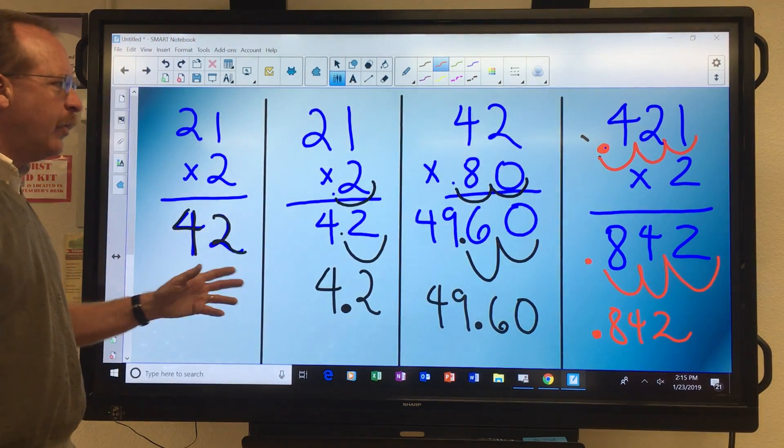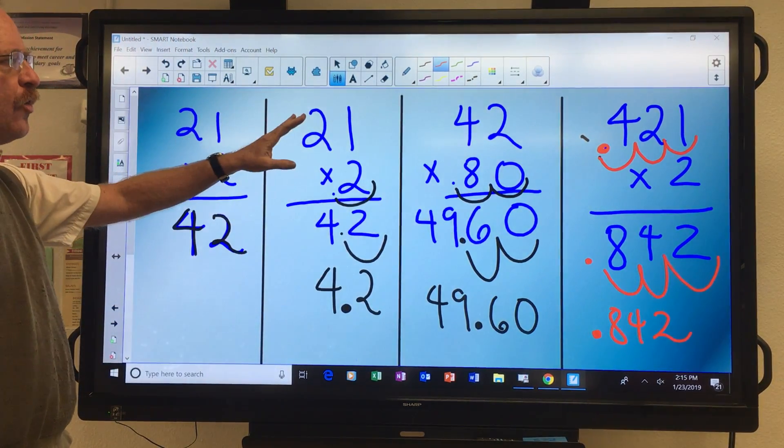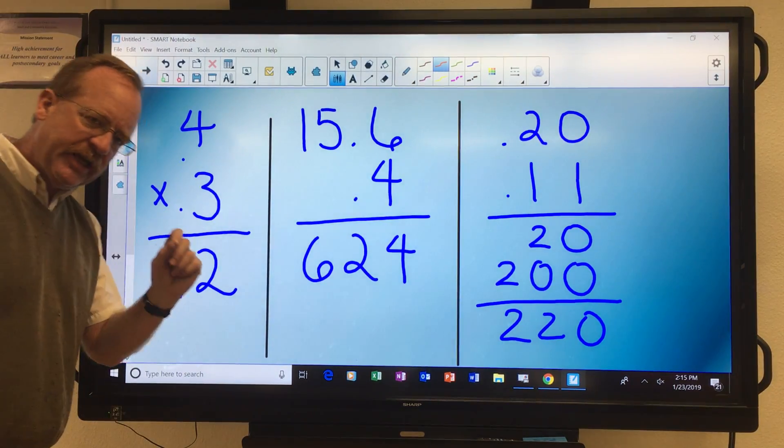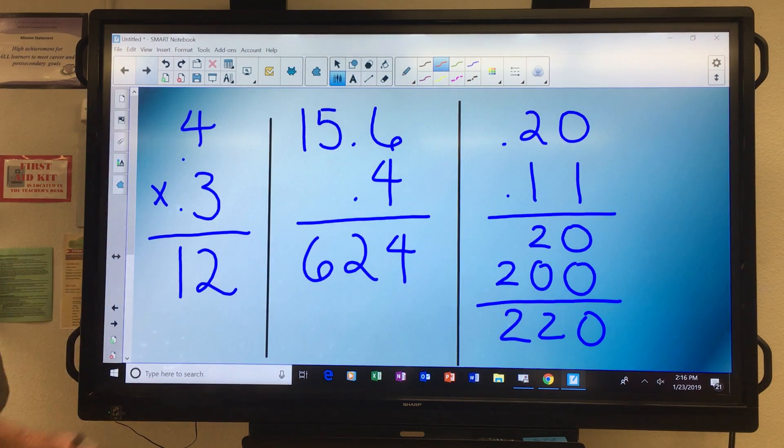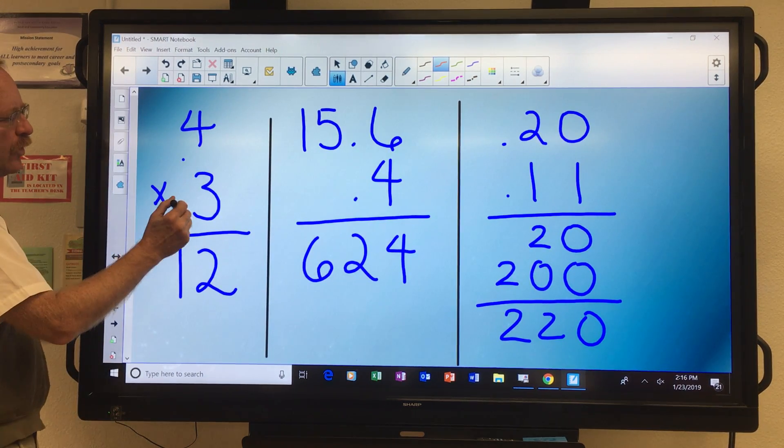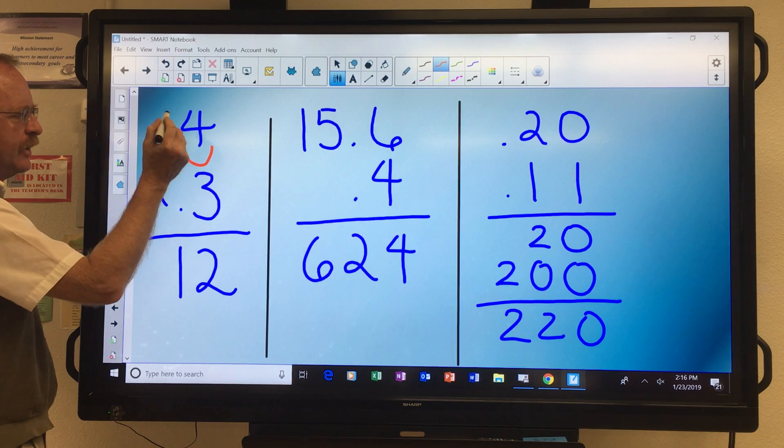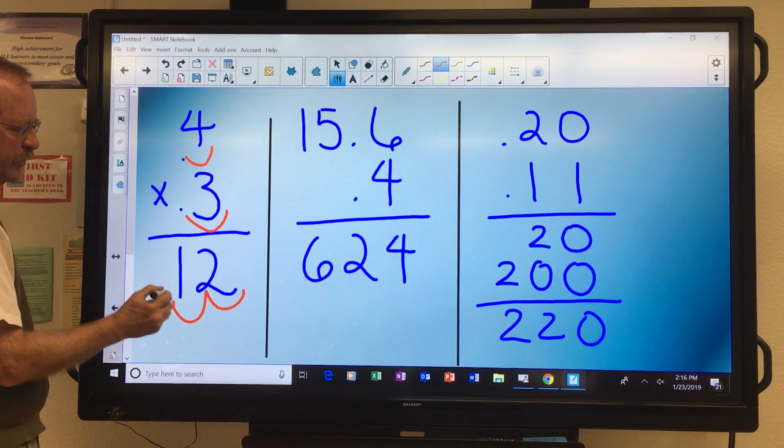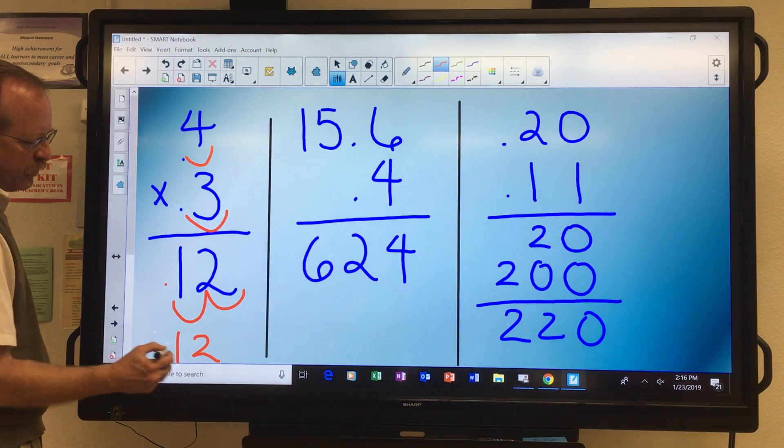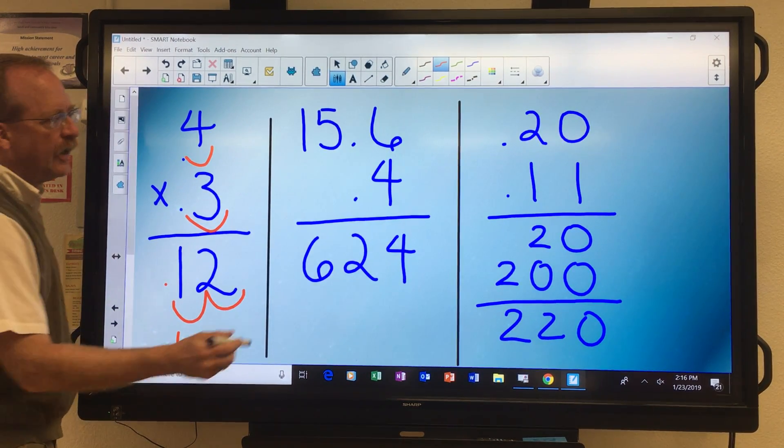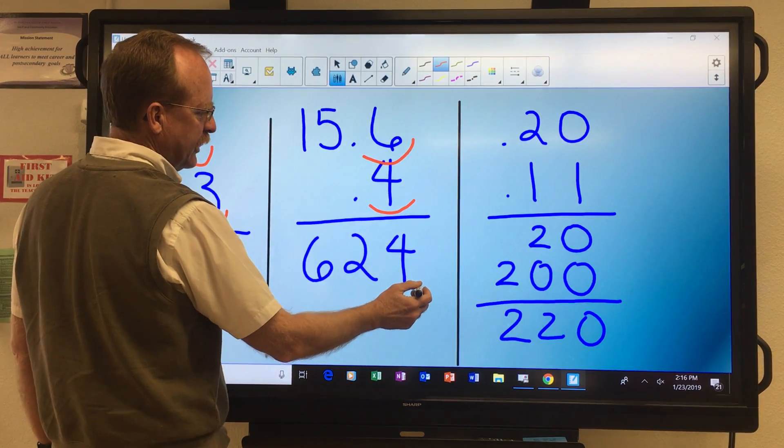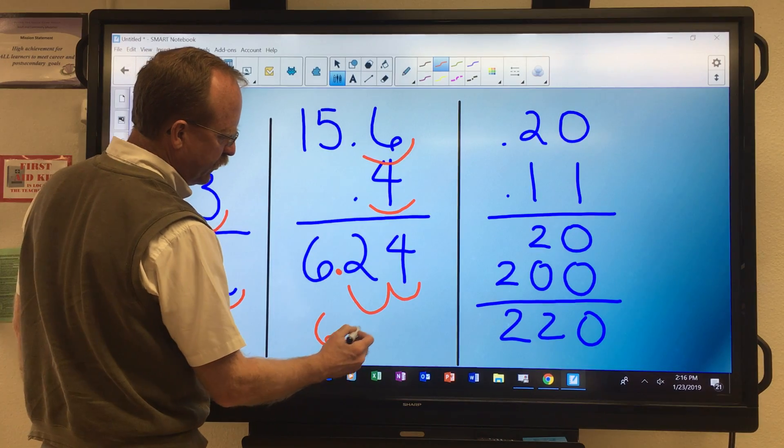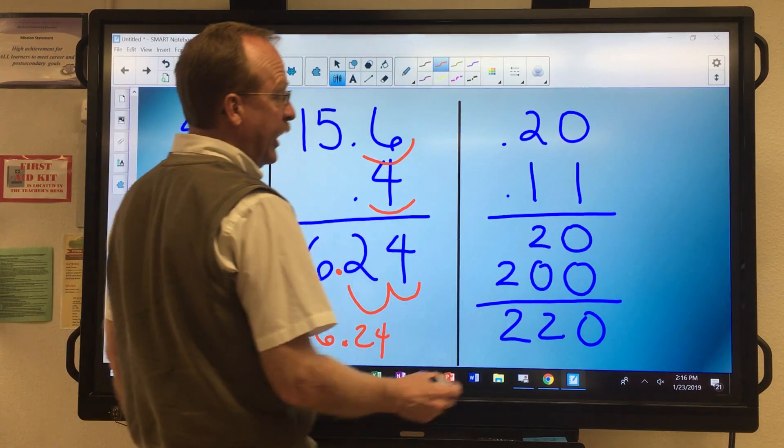Now, what do I do if both numbers that I'm multiplying have decimals? Same thing as before, just add your result. So here I have .4 times .3, so this is 1, 2, so I start from here, 1, 2. Final answer, .12. 1, 2, 1, 2. Final answer, 6.24.